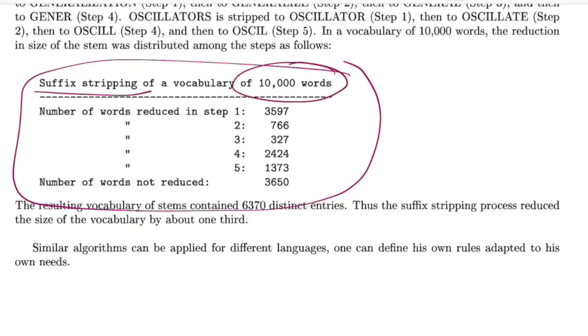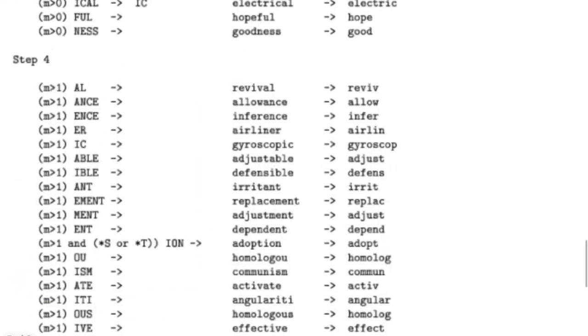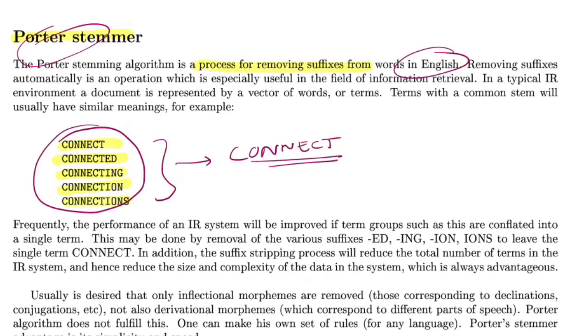If you have a vocabulary of 10,000 words and you do suffix stripping, these are the number of words that get reduced at every step. Finally, the number of words that didn't get reduced were 3,650. Now from 10,000 words, you have a unique stem of 6,370. This is the vocabulary reduction that speeds up the searching process.